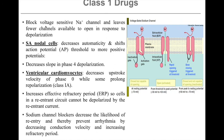In SA nodal cells, sodium channel block decreases automaticity and shifts the action potential threshold to more positive potentials, decreasing the slope of the initial phase 4 depolarization. In ventricular cardiomyocytes, which is the predominant effect, it decreases the upstroke velocity of phase 0. Some class 1 drugs also prolong repolarization and increase the effective refractory period, so cells in a re-entrant circuit cannot be depolarized again by a re-entrant current. Sodium channel blockers thus decrease the likelihood of re-entry and prevent arrhythmia by decreasing conduction velocity and increasing the refractory period.